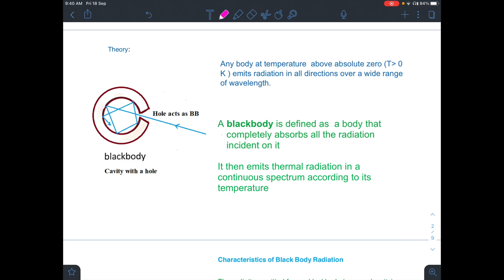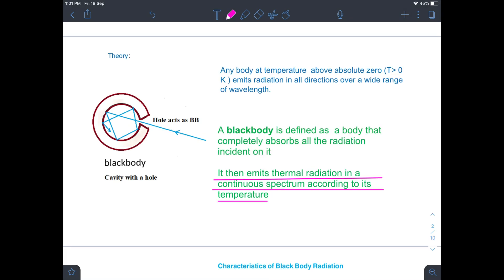Any body at temperature above absolute zero emits radiation in all directions over a wide range of wavelength. A blackbody is defined as a body that completely absorbs all the radiations incident on it.